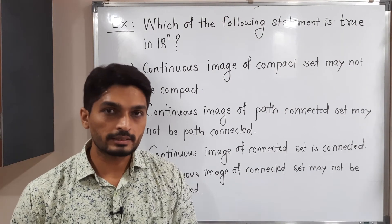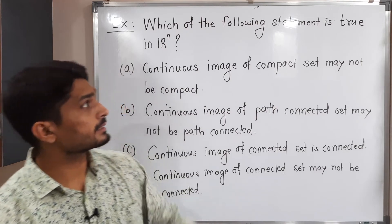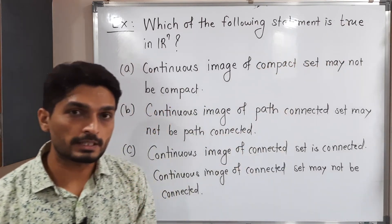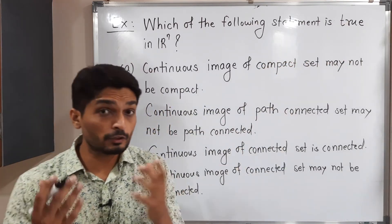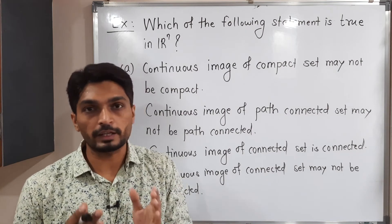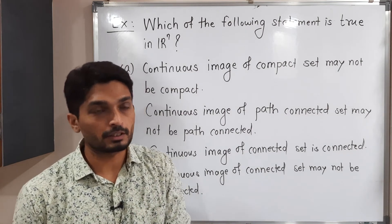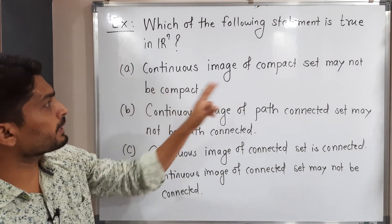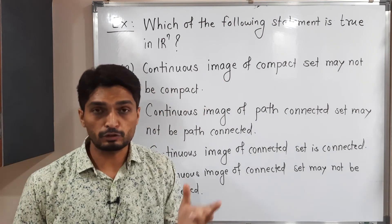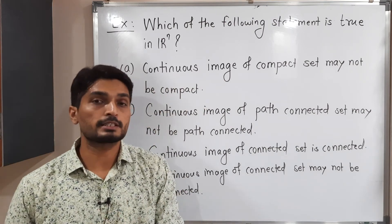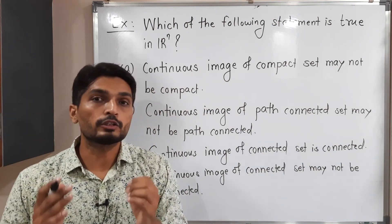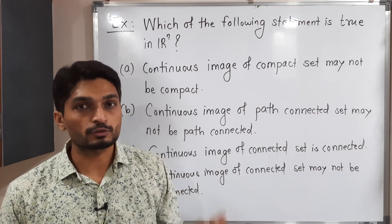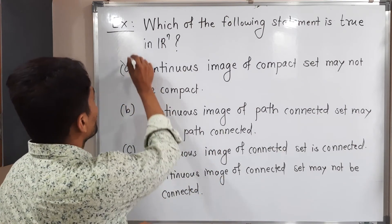Let us discuss this second example. In this second example we have to find a correct statement — in the previous example we had to find a wrong statement, but here we have to find a correct statement. First option: continuous image of compact set may not be compact. But we already saw that continuous image of compact set must be compact, so this is a wrong statement.